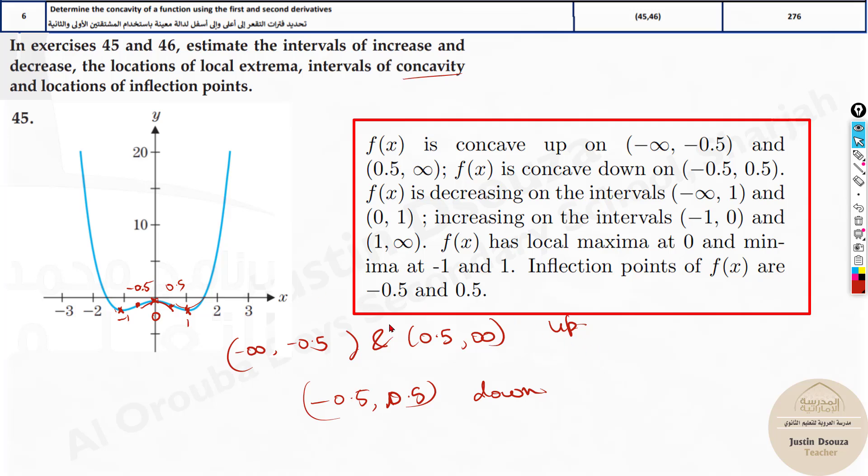So now that is what we will approximate and write. Over here we can also tell what are maximum and minimum points. It is approximating towards minus 1 and 1. So even that is mentioned from the graph.